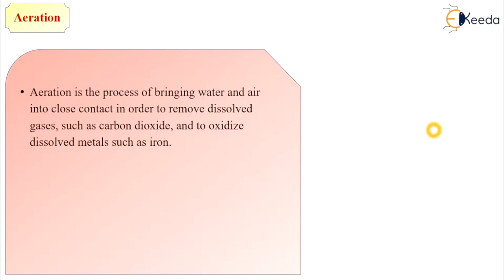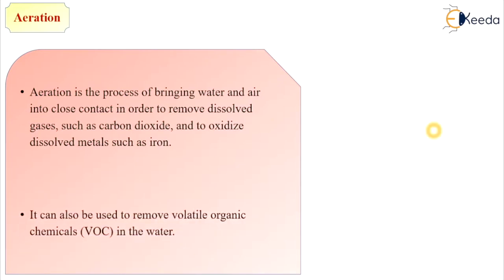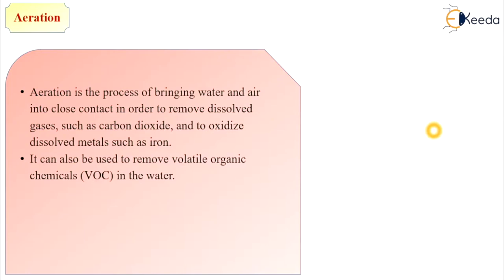Aeration is the process of bringing water and air into close contact in order to remove dissolved gases such as carbon dioxide, and to oxidize dissolved metals such as iron ions. It is a transfer mechanism — transfer of gases between water and air. We are removing gases like carbon dioxide and hydrogen sulfide from the water and oxidizing the impurities present in water. It can also be used to remove volatile organic chemicals in the water.